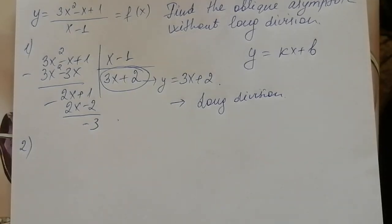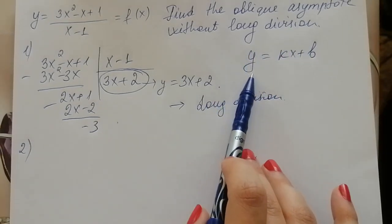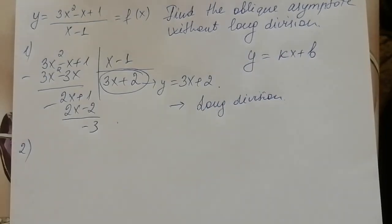So there's formulas for finding k and b and after that we simplify the formula of oblique asymptote.